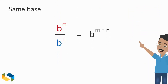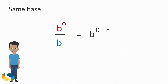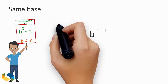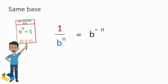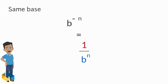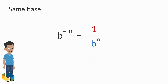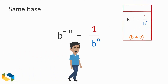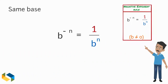In this equation, let's see what happens if M is equal to zero. From the zero exponent rule we know B raised to the power zero is one, so we get B raised to the power minus N is equal to one divided by B raised to the power N. We just derived the negative exponent rule.